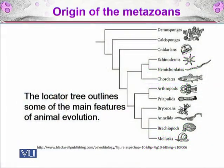In this diagram, we have a phylogenetic tree which outlines some of the main features of animal evolution. In the demo sponges, you have the sponge-like structures. The demo sponges and calcium sponges are much more related to each other. And then there come the metazoans which are the cnidarians.